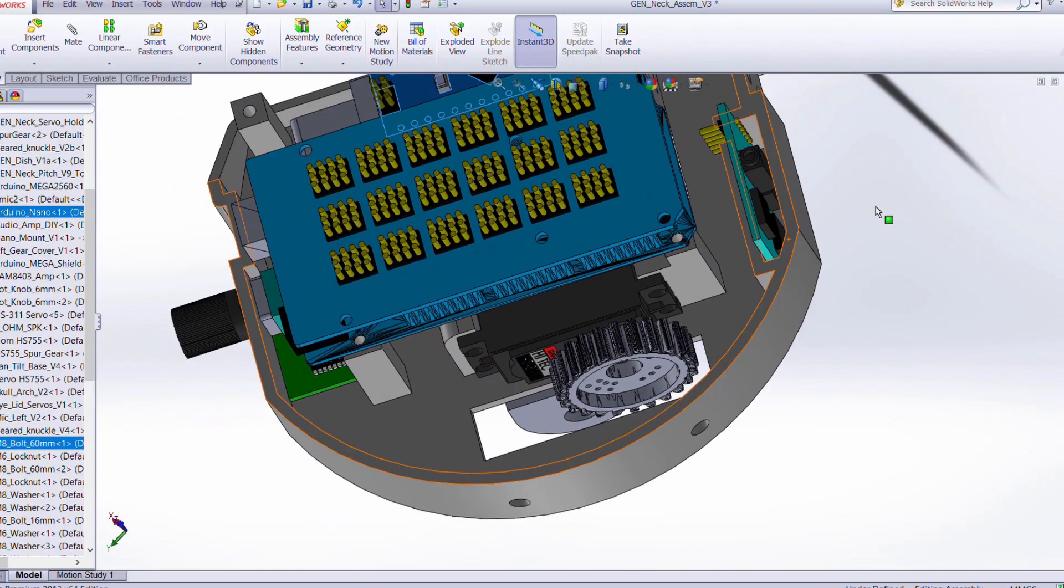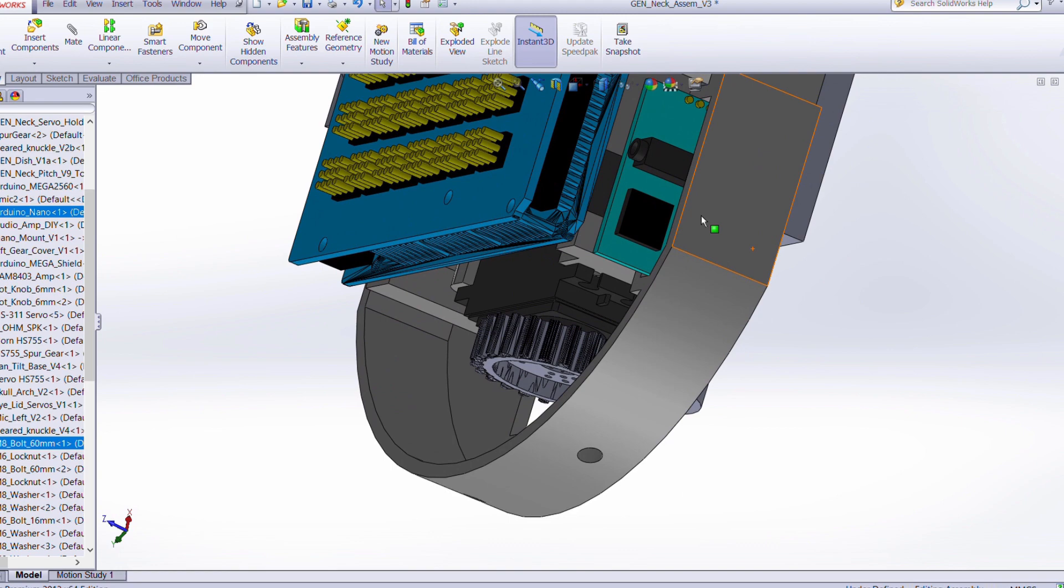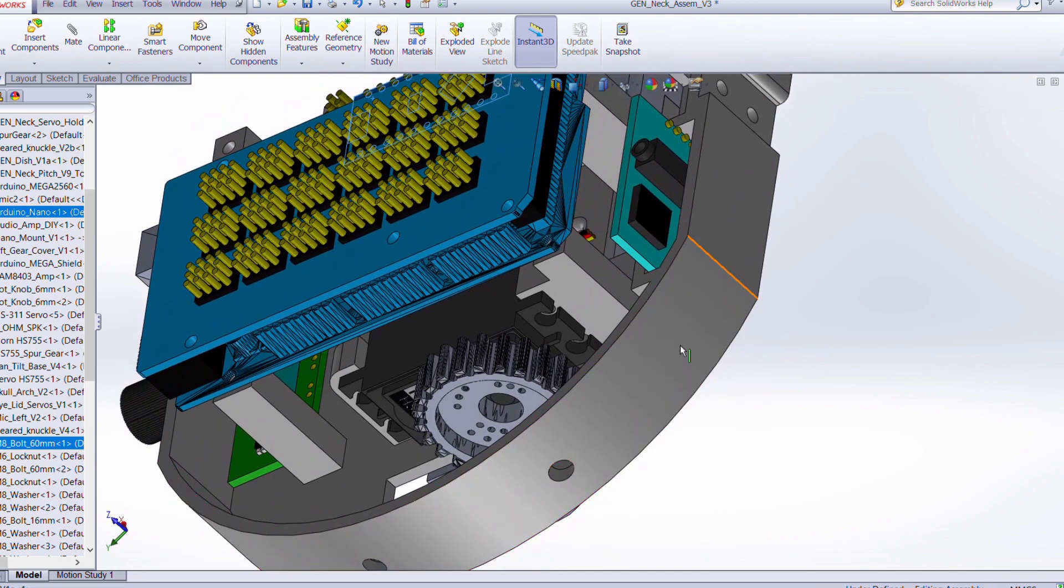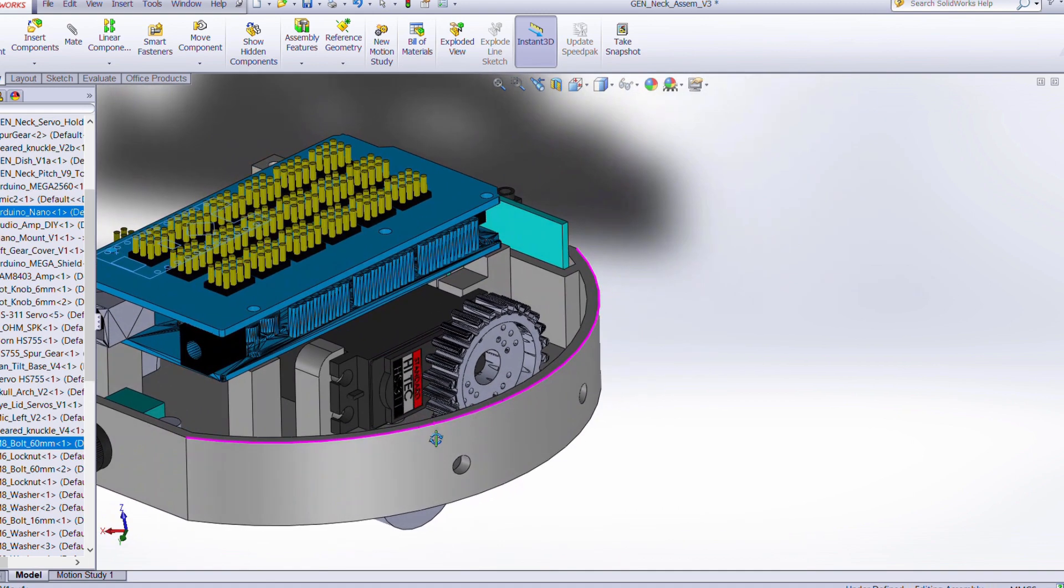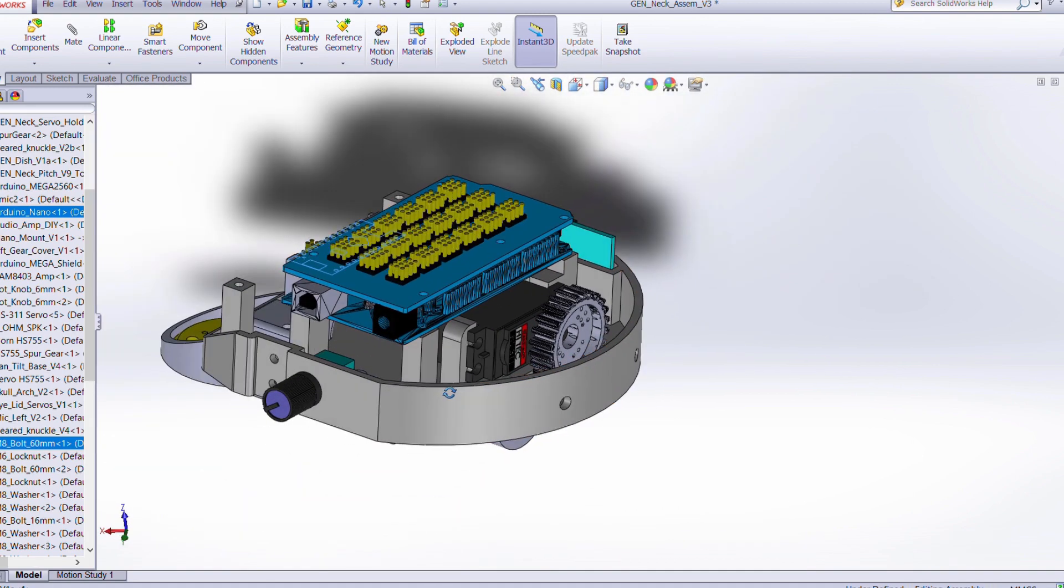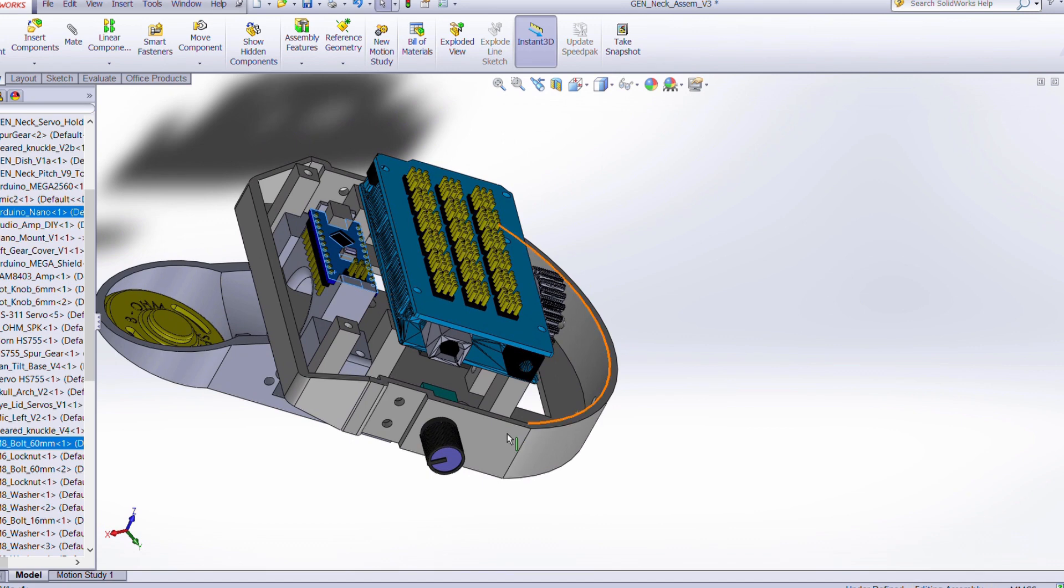And then on the other side here I have just a small compartment that will house the IMIC2 text-to-speech module which I use to generate the voice. And that actually has a little more room in here for maybe a couple other components if we need to, plus plenty of room to hopefully manage all of the wiring.